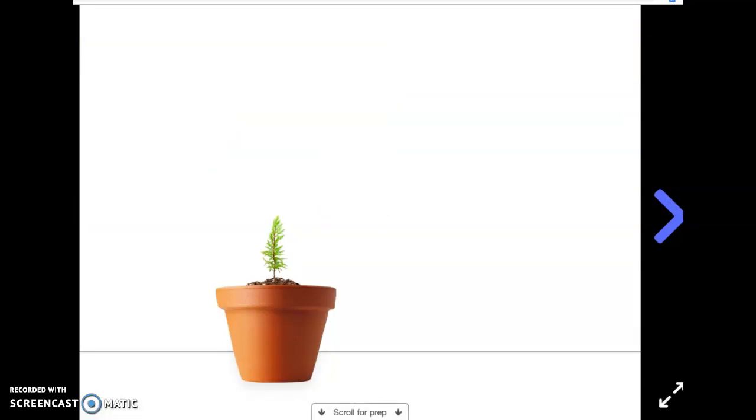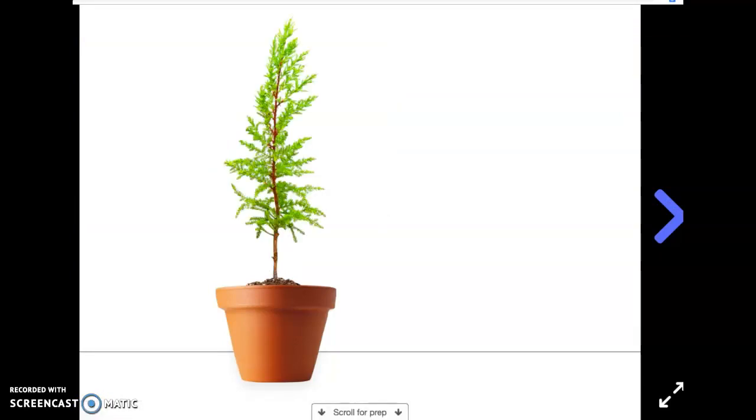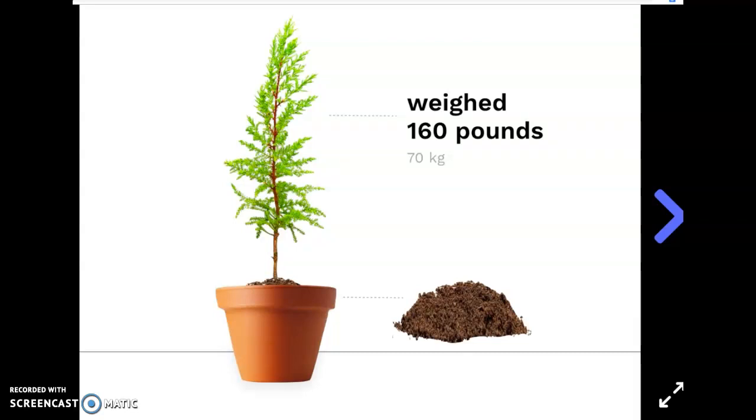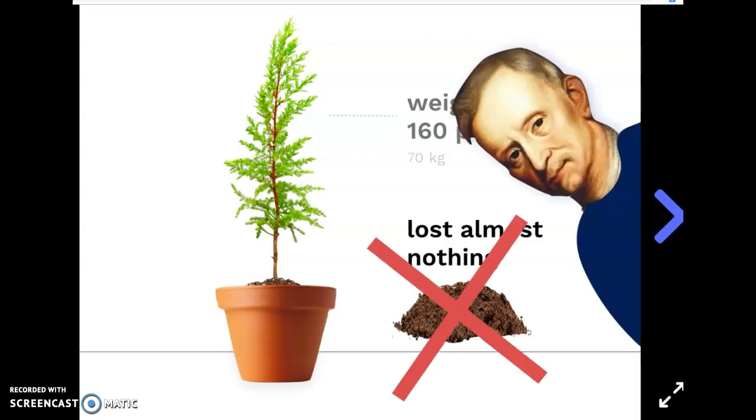After five years, once his small tree had grown and gained weight, he carefully took it out of the pot. He weighed the tree and he weighed the soil. The tree weighed 160 pounds. It had gained a lot of weight compared to the two pounds it started at. But to his amazement, the soil had barely changed in weight. It started at 200 pounds and now was only just 199.8 pounds. It lost almost nothing, just the tiniest amount. So that 158 pounds of new tree, it couldn't have come from the soil. The scientist Van Helmont was convinced. Plants don't get most of their weight from soil. His experiment showed it. Mystery solved. Sort of.